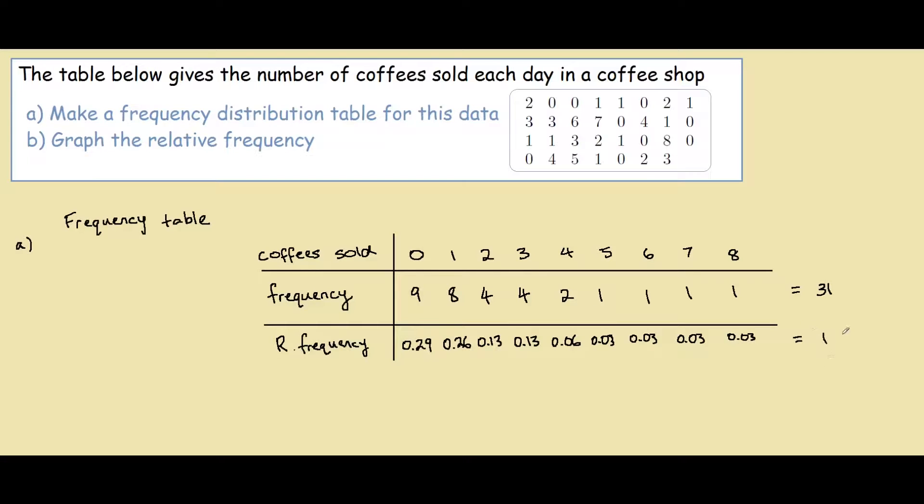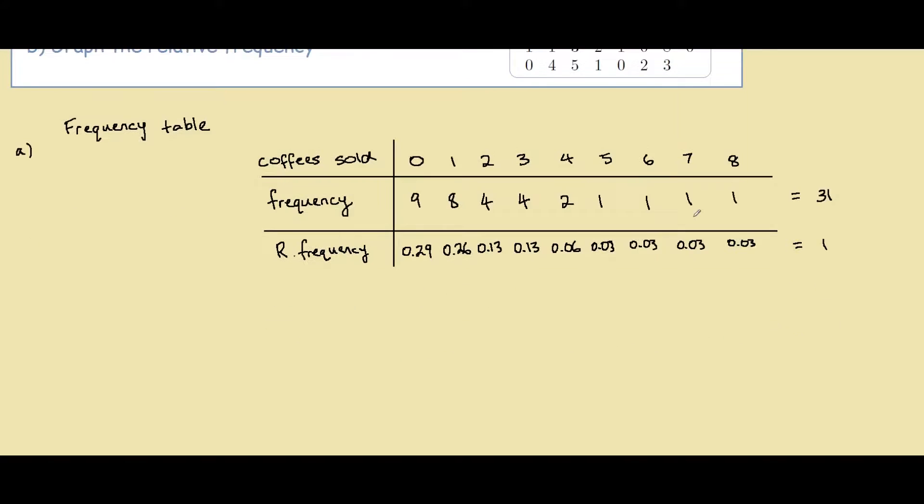1 in this case can also be thought of as 100%. So now when we want to graph the relative frequency against the number of coffees sold, we have a Y axis and a horizontal axis. So this one is the relative frequency. And this is the number of coffees sold. So like here we have 0, 1, 2, 3, 4 all the way to 8.